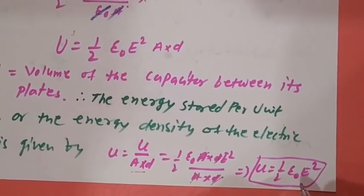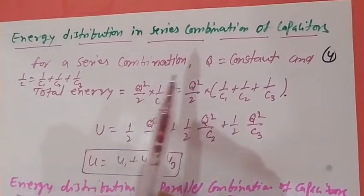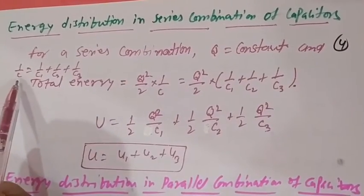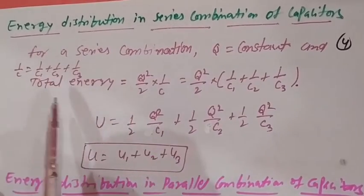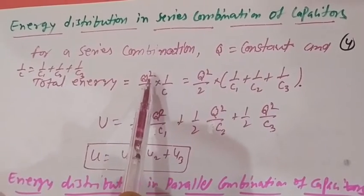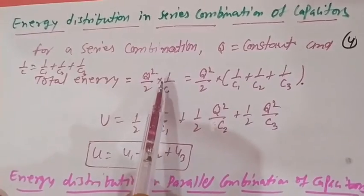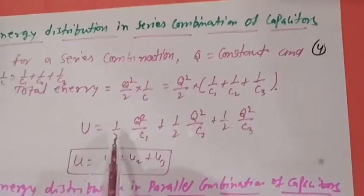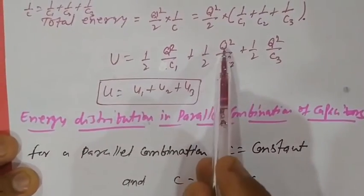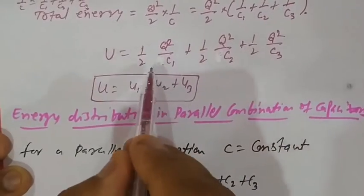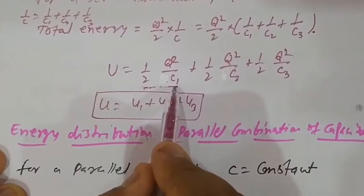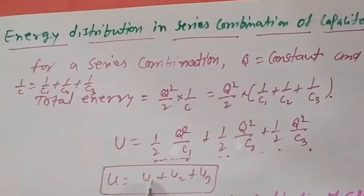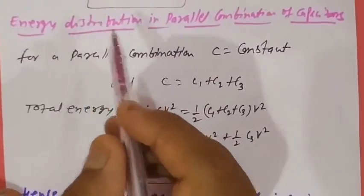The energy stored per unit volume, or the energy density of the electric field, is u = U/(A×d) = (1/2)ε₀E²×(Ad)/(Ad), so A and d cancel, giving u = (1/2)ε₀E². For a series combination of capacitors, charge Q is constant and equivalent capacitance: 1/C = 1/C1 + 1/C2 + 1/C3. Total energy U = Q²/2C = (1/2)Q²/C1 + (1/2)Q²/C2 + (1/2)Q²/C3 = U1 + U2 + U3.